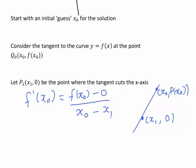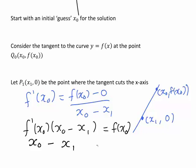We can rearrange this equation to get an expression for x1. In particular, if we multiply both sides by x0 minus x1, we get f dashed x0 times x0 minus x1 equal to f of x0 minus 0, which is just f of x0. We can then divide both sides by f dashed x0 to get x0 minus x1 equals f of x0 divided by f dashed x0.